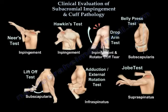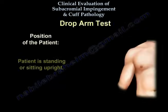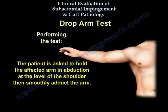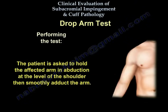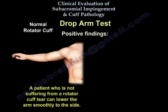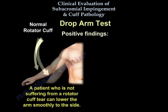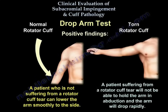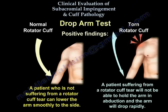Drop arm test. The patient will be standing or sitting upright. The patient is asked to hold the affected arm in abduction at the level of the shoulder, then smoothly adduct the arm. In a patient not suffering from a rotator cuff tear, the patient can lower the arm smoothly to the side. A patient suffering from a rotator cuff tear will not be able to hold the arm in abduction and the arm will drop rapidly.